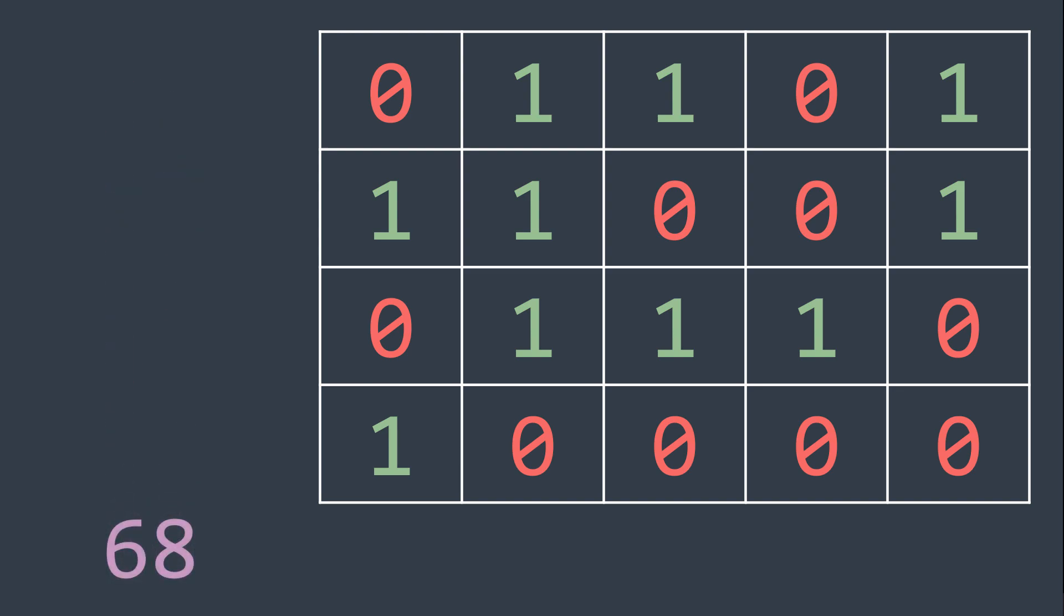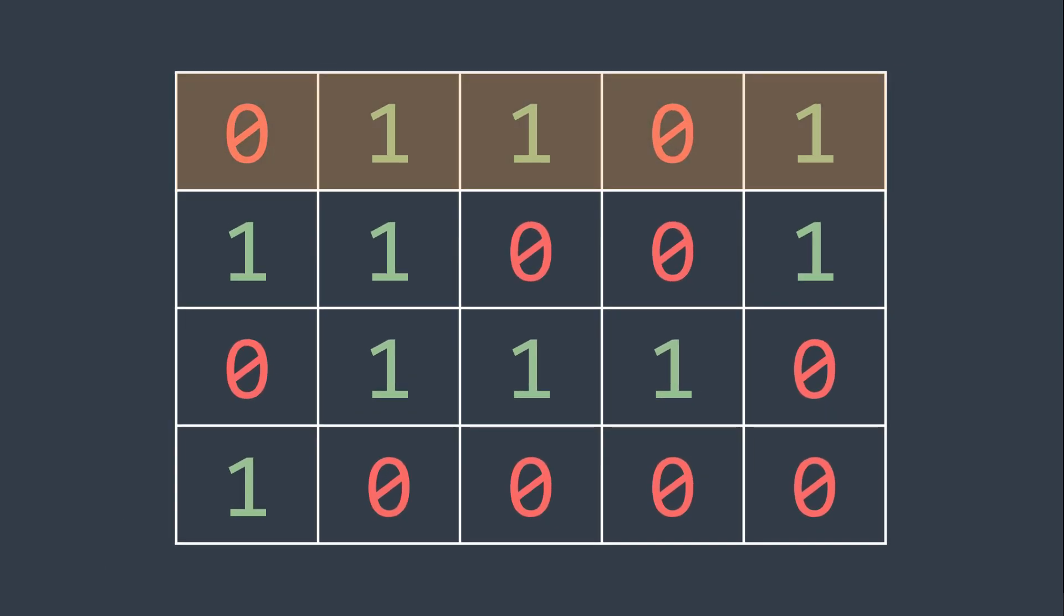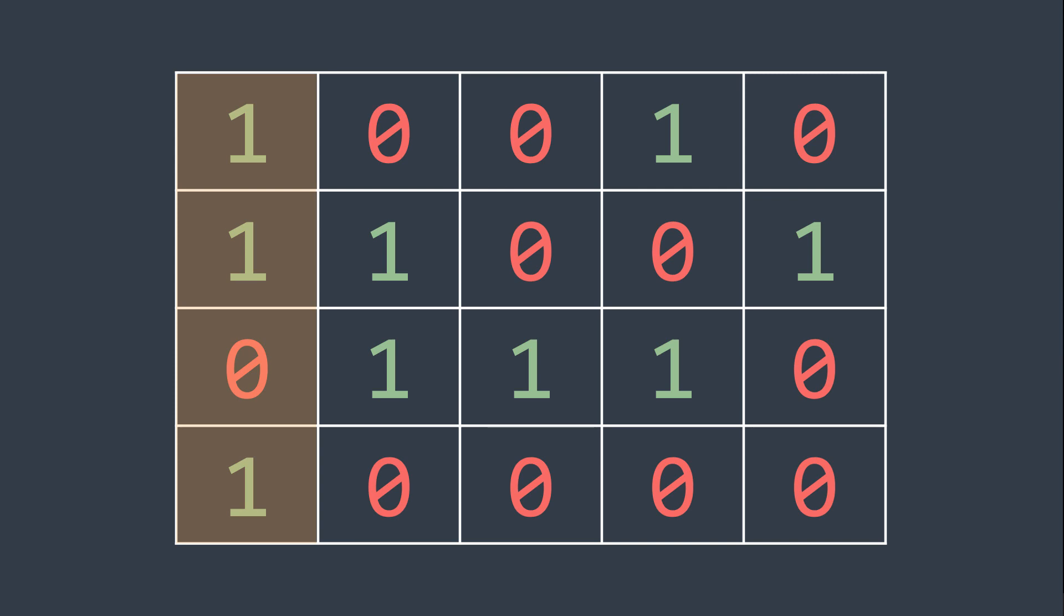But we want to have the greatest possible sum, and for that, we can toggle the row or column we want. By toggling, we mean to interchange ones and zeros. For example, if we toggle the first row, which is 0, 1, 1, 0, 1, it becomes 1, 0, 0, 1, 0. If we toggle the first column, which is 1, 1, 0, 1, it becomes 0, 0, 1, 0.